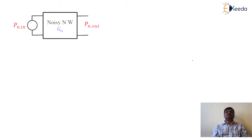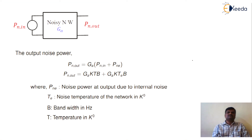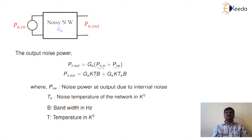We will calculate the output noise power of the two-port network. The output noise power is given as N_output equal to G_A multiplied by the quantity (N_input plus N_e), where N_input is the input noise power and N_e is the noise power added by the internal component of our device. This is expressed as N_output equal to G_A · kTB, where k is Boltzmann's constant, T is the temperature in Kelvin, and B is the bandwidth, representing input noise power, plus G_A · kT_e · B, where T_e is the noise temperature of the network in Kelvin.